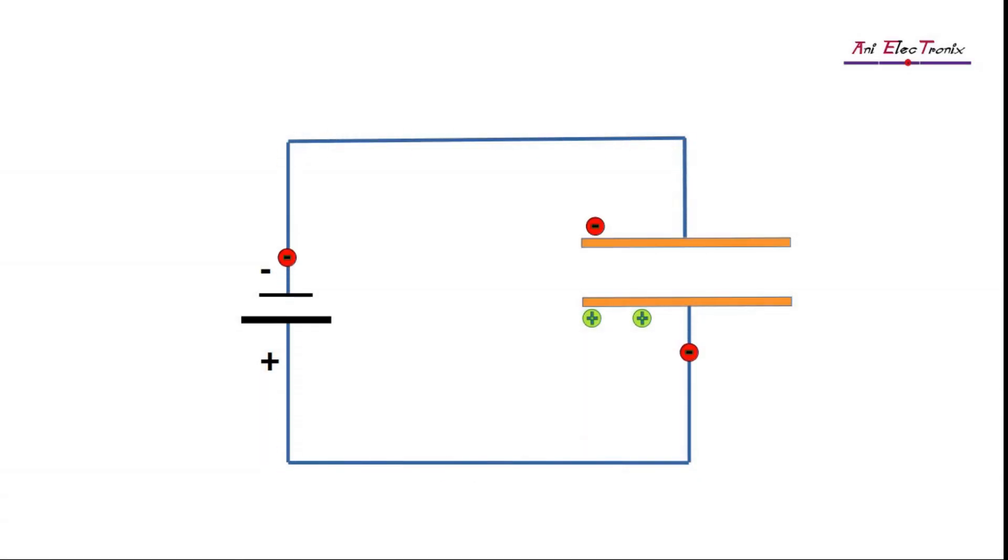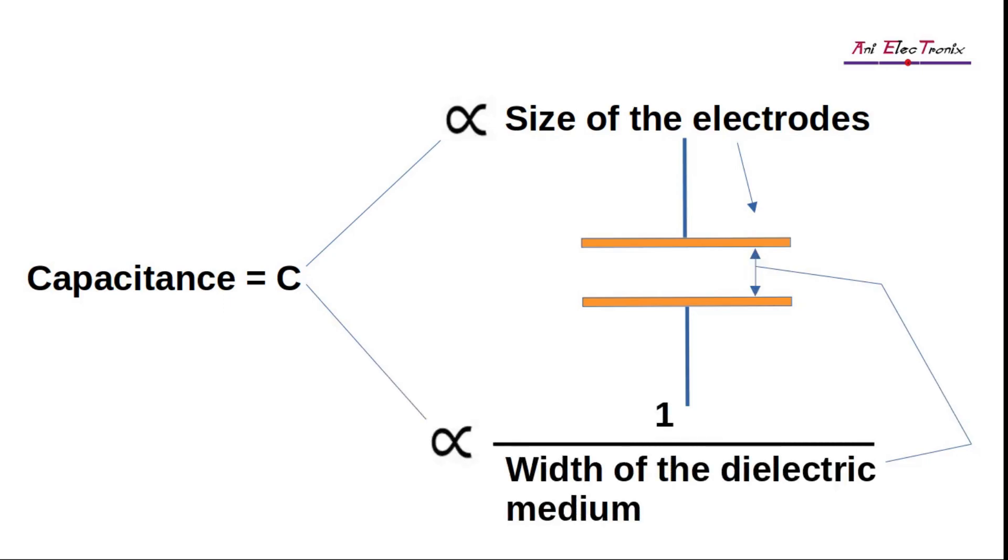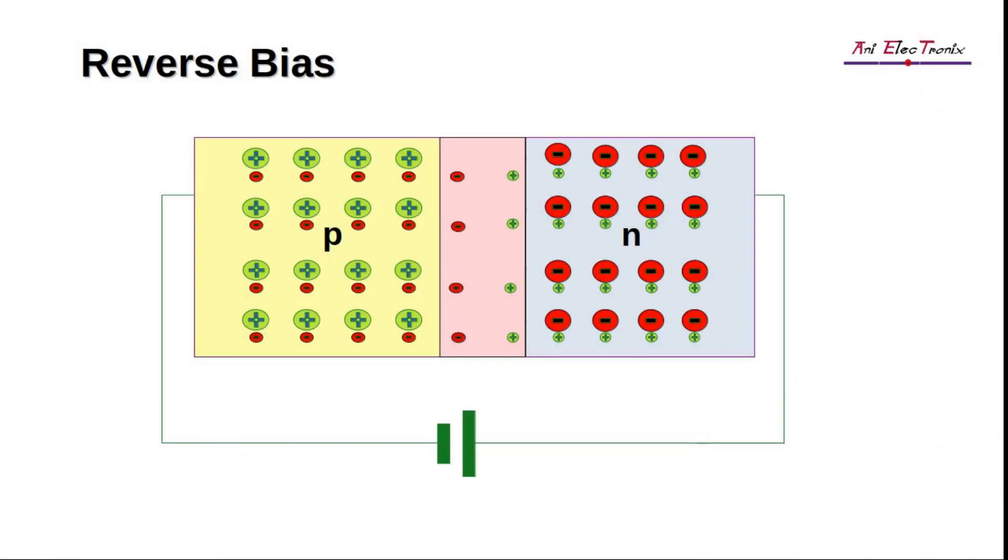Capacitance refers to a material's ability to store electric charges. The capacitance of a capacitor is directly proportional to the size of its electrodes and inversely proportional to the distance between the plates. As a recap, we should consider the function of a capacitor, and recall the reverse bias characteristics of a P-N junction diode from episode 5.